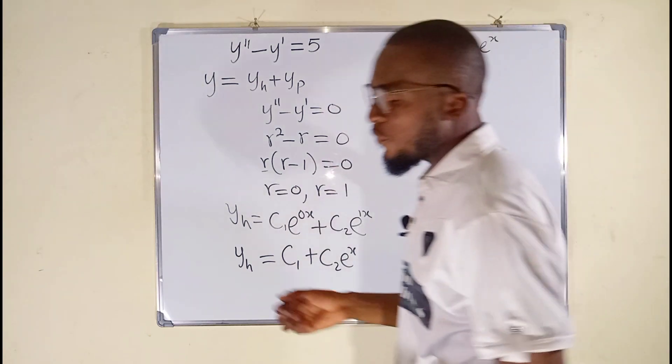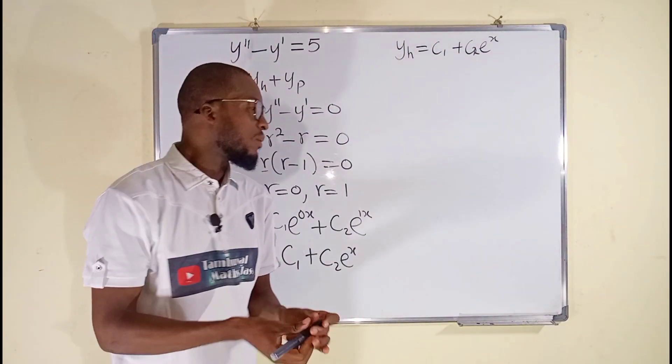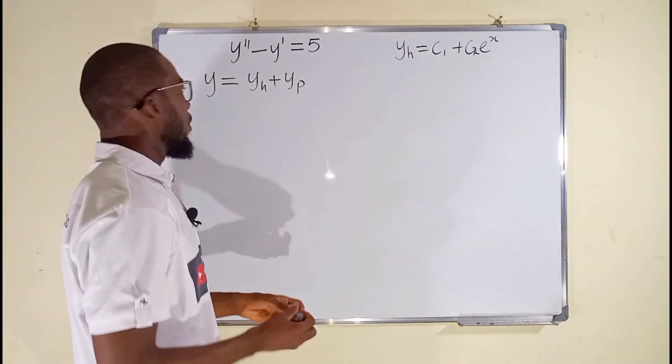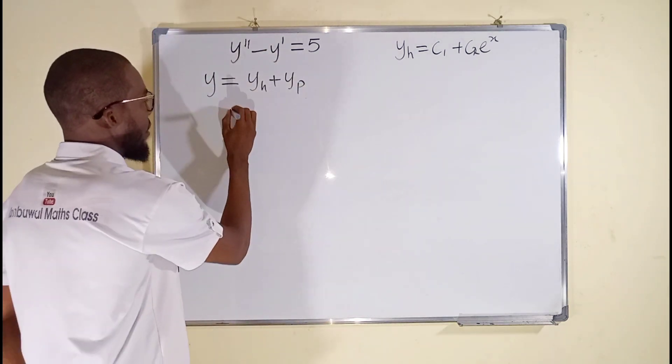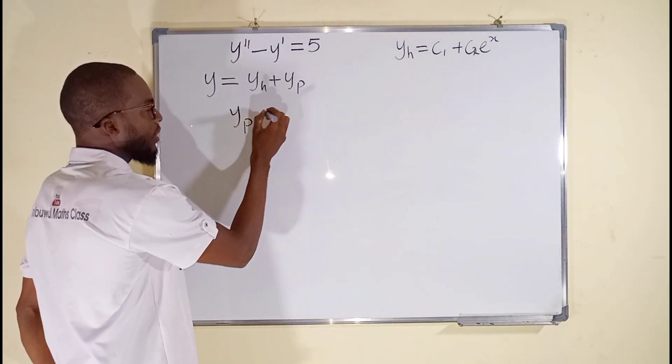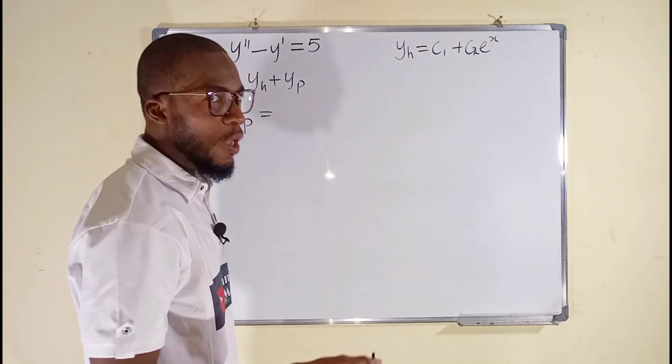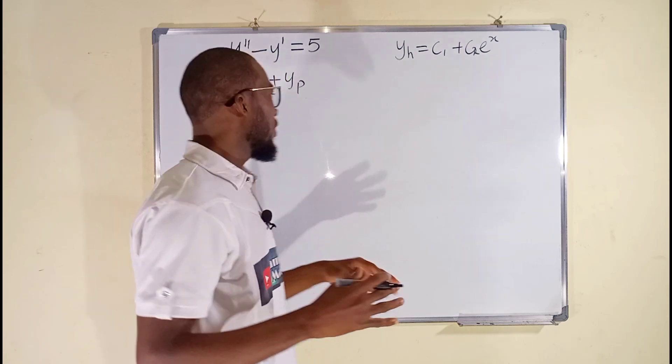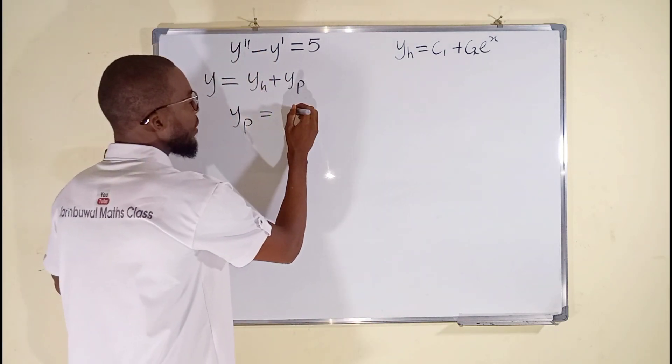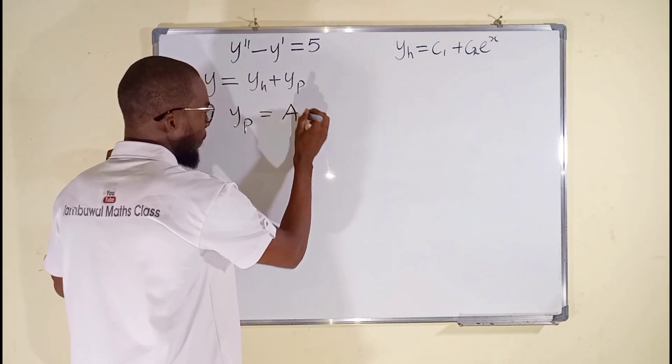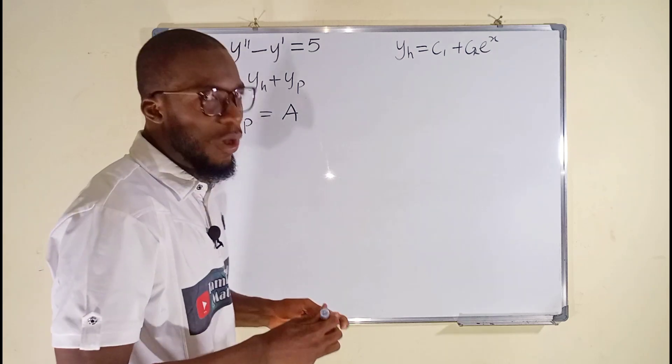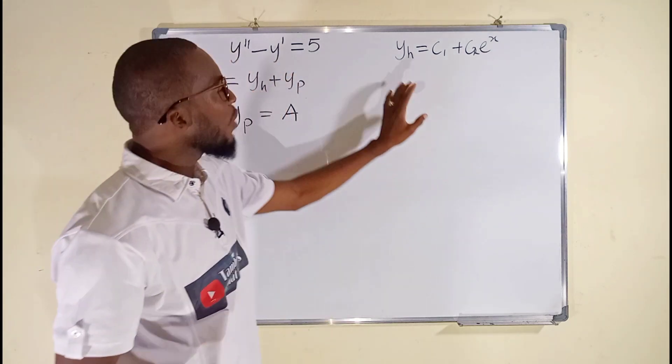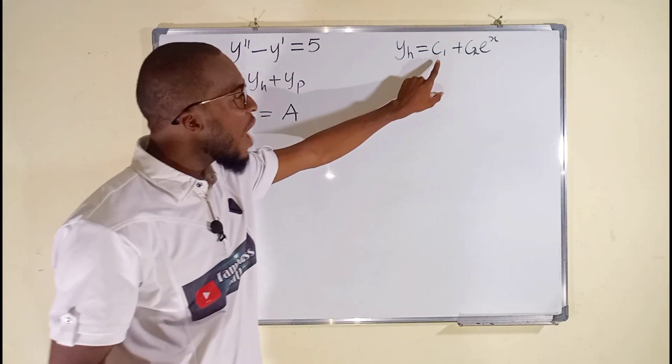So now let me take this down and find the particular solution. y sub p, you know, it depends on the nature of the right-hand side. The right-hand side is just a constant. Remember, if you have a constant to the right, just set y sub p to be a constant, but you have to relate. You can see from y sub h, we have a constant.